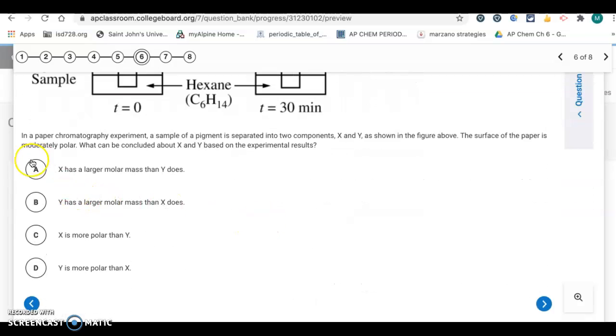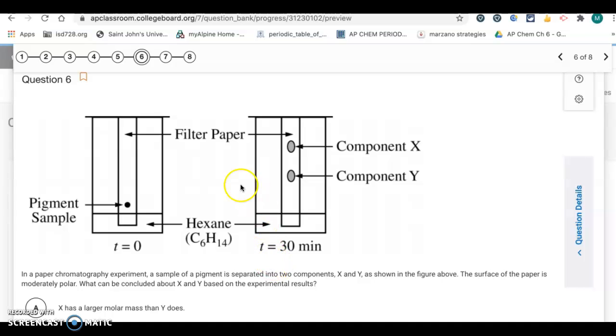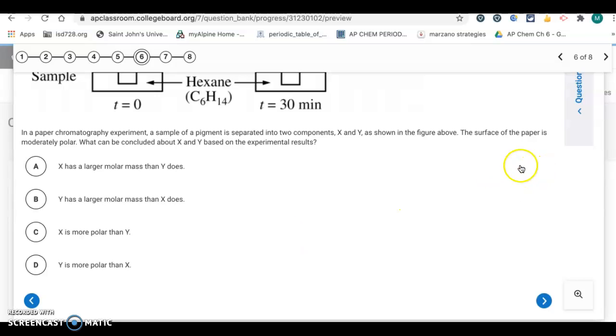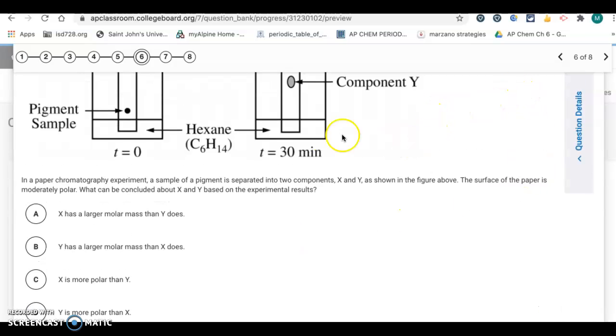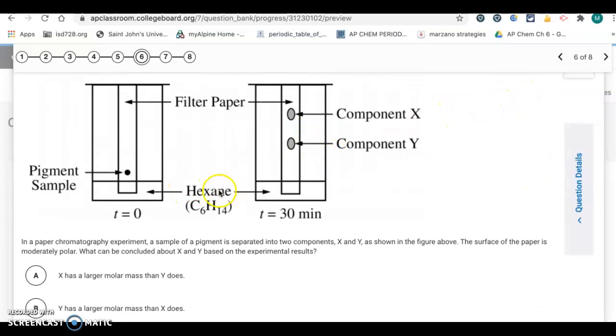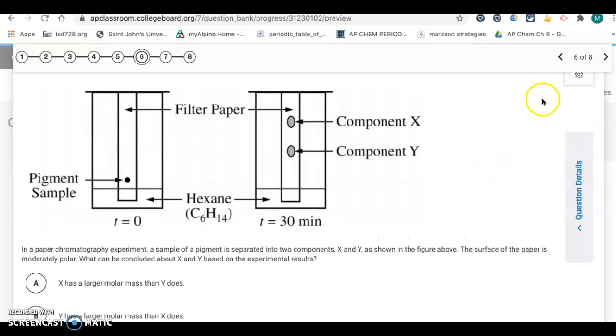So, now you look at your choices down here. A and B, it has nothing to do with the molar mass in this case. We can say X is more polar than Y. Y is more polar than X. So, it's Y is more polar than X. So, it's going to be letter D. The one that's most similar to the mobile phase is going to travel the farthest when you do this paper chromatography.